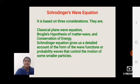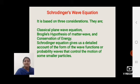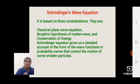The Schrödinger wave equation is based on three considerations. The first is the classical plane wave equation, the second is de Broglie's hypothesis of matter waves, and the third is the conservation of energy. The Schrödinger wave equation gives a detailed account of the form of the wave function, or probability waves, which controls the motion of smaller particles.